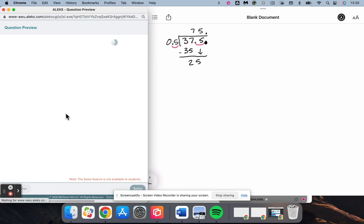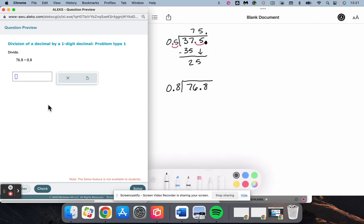All right, next we have 76.8 divided by 0.8. So our number outside the box needs to move one spot to the right to become a whole number. If we move one spot to the right outside, we move one spot to the right inside.